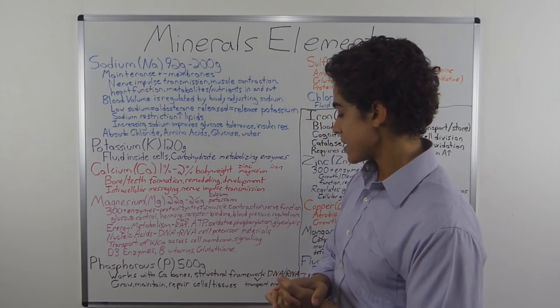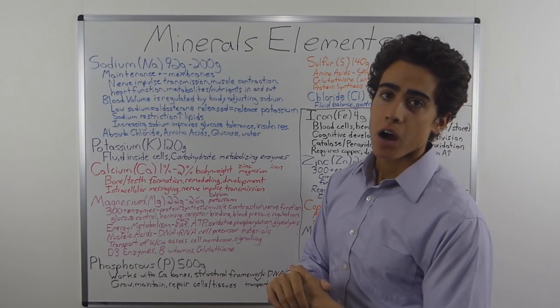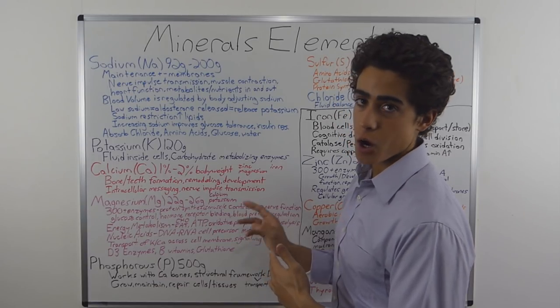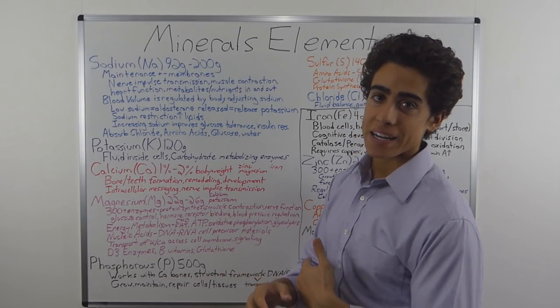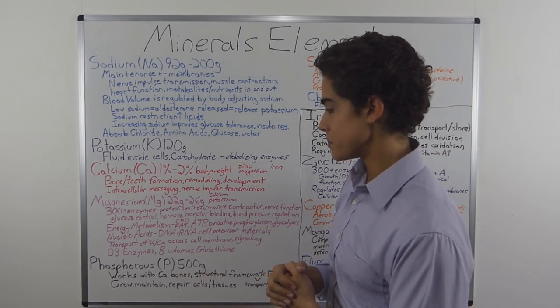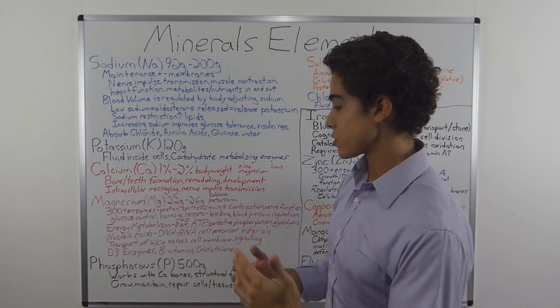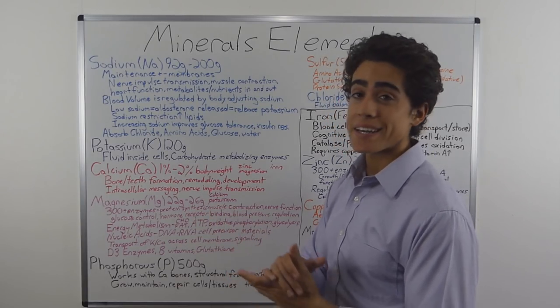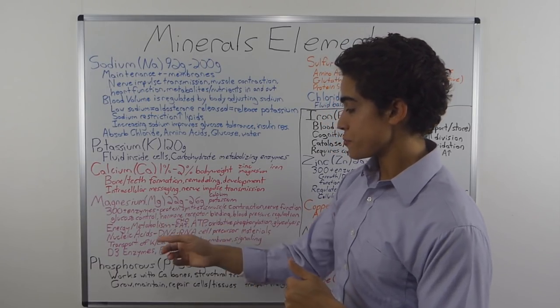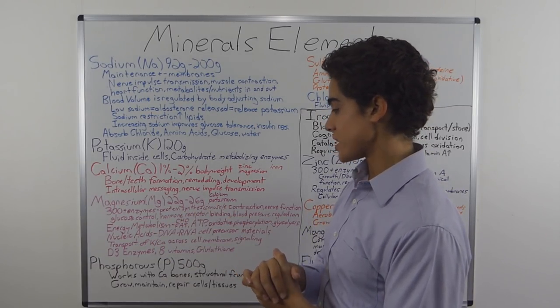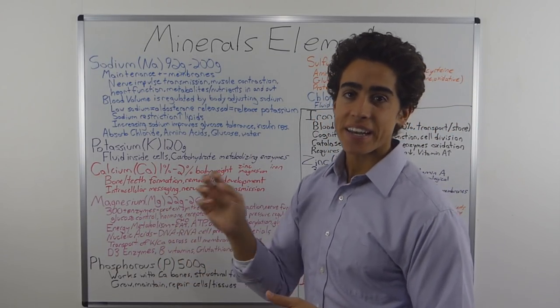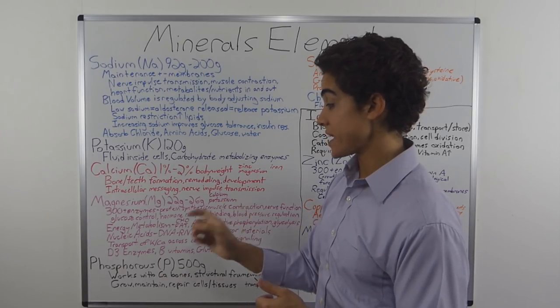It is involved in oxidative phosphorylation, which is energy production in the mitochondria of the cell. So every cell in our body needs magnesium for energy, as well as glycolysis, another energy process in the body. Magnesium is also needed to create nucleic acids, which are DNA and RNA cell precursor materials. It is involved in the transport of potassium and calcium across cell membranes, therefore plays a role in cell signaling.